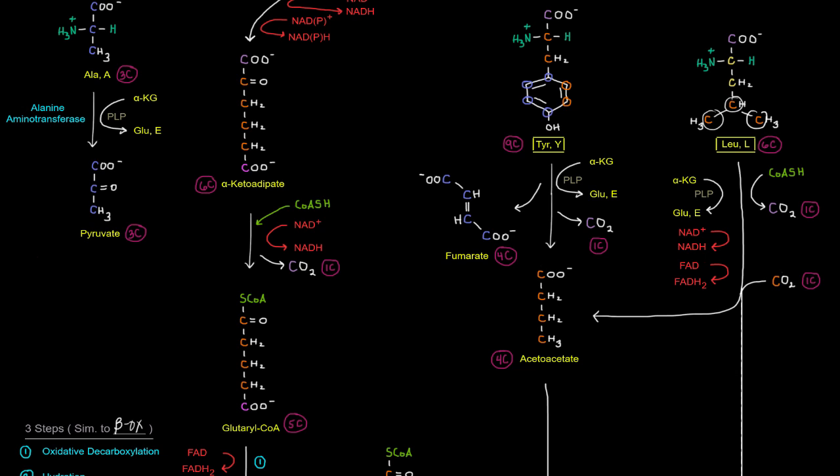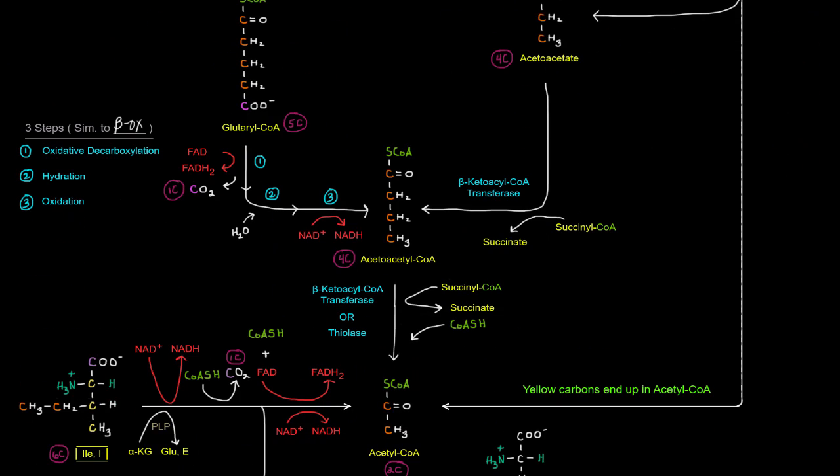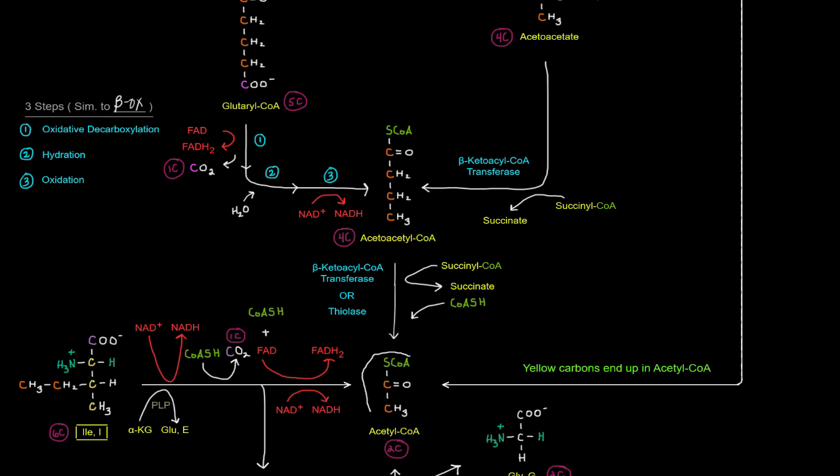So three of the four orange carbons came from right here. The fourth one comes from a carbon dioxide. So we get those four carbons there. What happened to these two yellow carbons? Well, those two yellow carbons, they get a coenzyme A attached to them, and they are going to give acetyl-CoA.